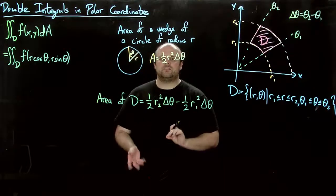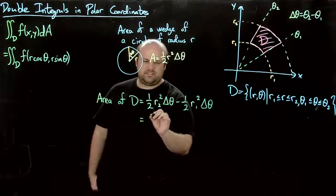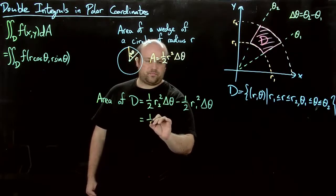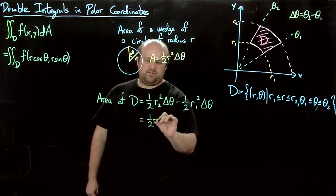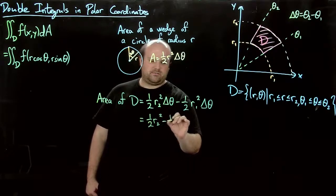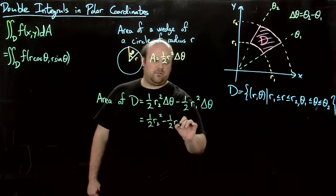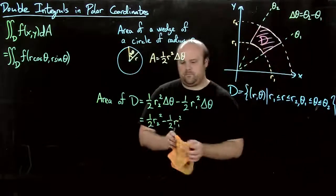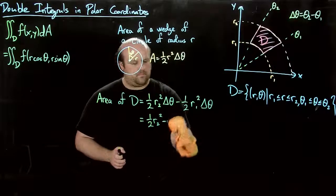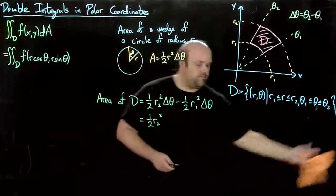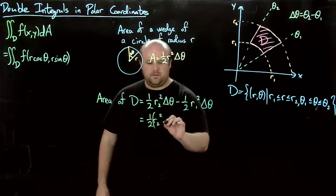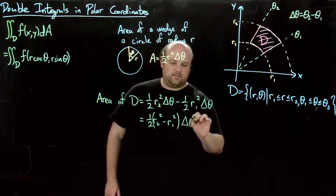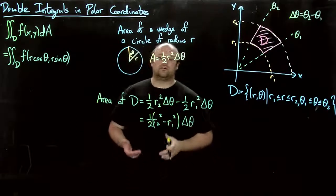Well, we're going to do a little trick here. So let's factor this, one-half r two squared minus one-half r one squared. Actually, let's even bring that one-half all the way out. So one-half r two squared minus r one squared delta theta.